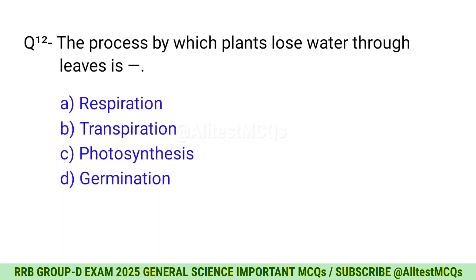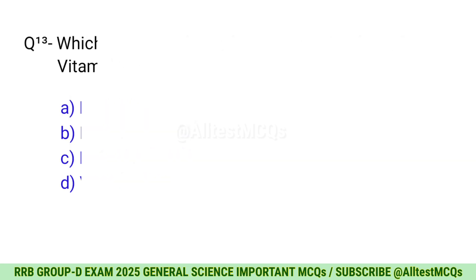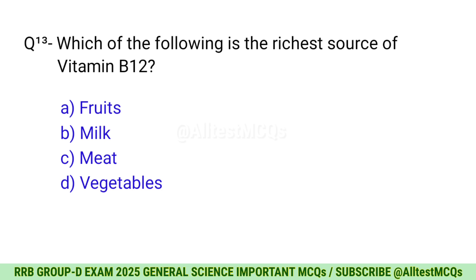Question 12: The process by which plants lose water through leaves is? B, Transpiration. Question 13: Which of the following is the richest source of vitamin B12? Correct option is C, Meat.